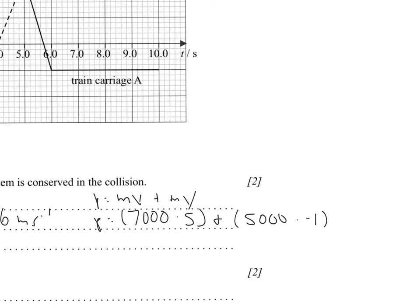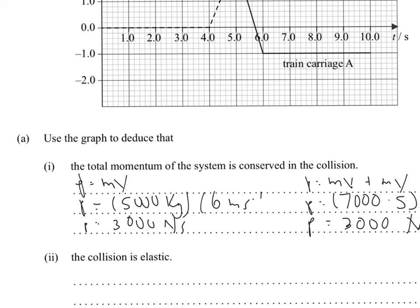And that gives you a momentum of, again, 3000 Ns. And as the final is equal to the initial, as 3000 Ns equals 3000 Ns, therefore, P is conserved.